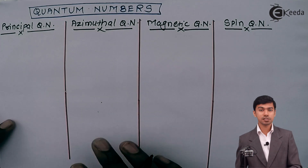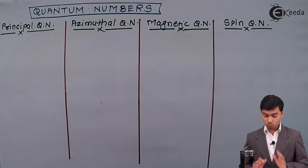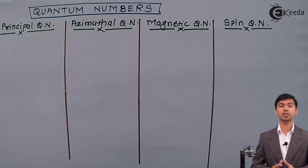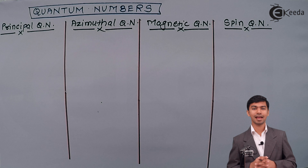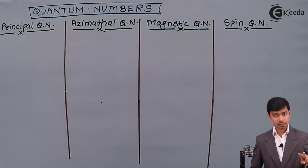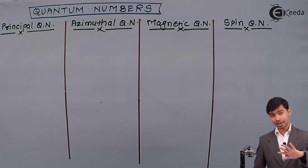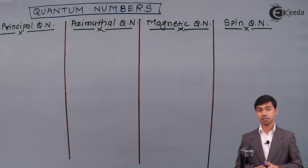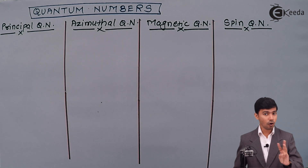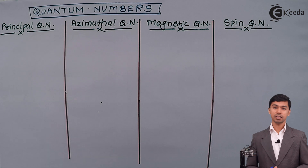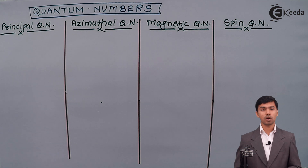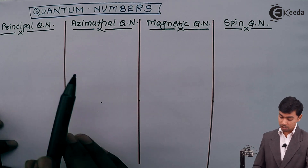Hello everyone, now we are going to see about quantum numbers. What are quantum numbers? Quantum numbers are the set of numbers which give detailed information of an atom. Whenever we think about an atom, things like nucleus, protons, neutrons, electrons come to mind, but also shells, subshells, and orbitals. All this information can be given by this set of numbers.